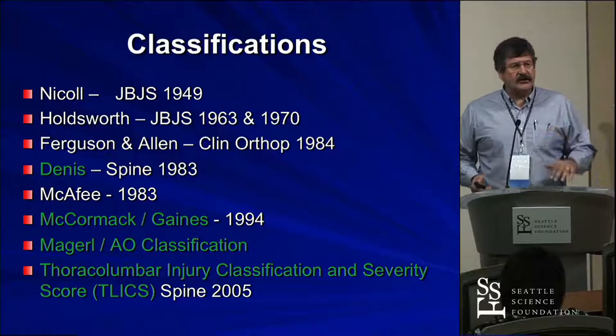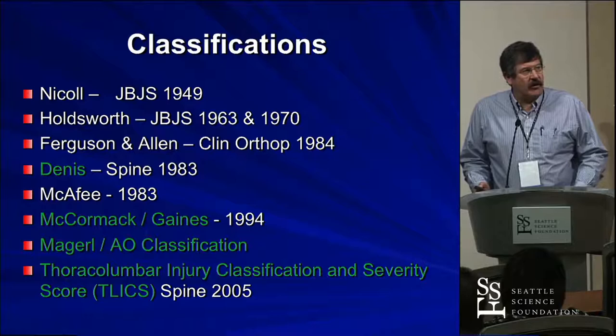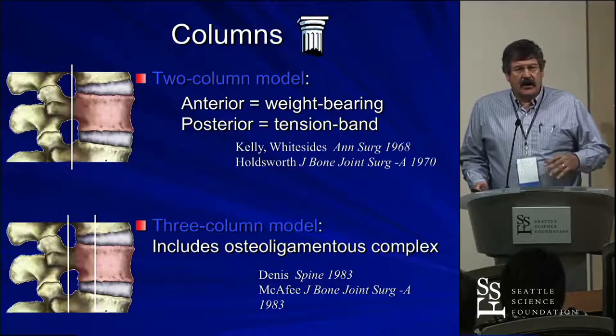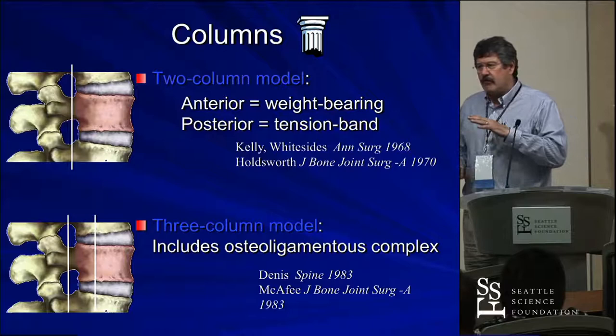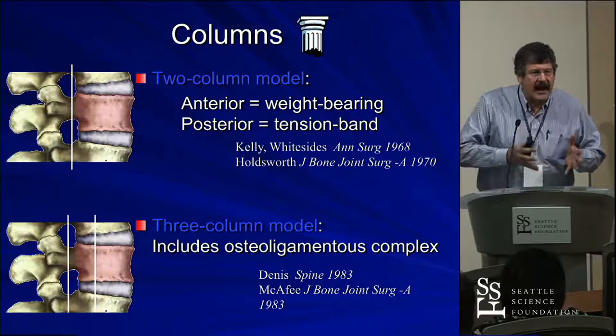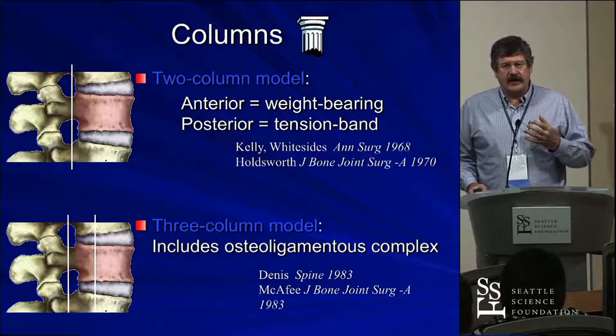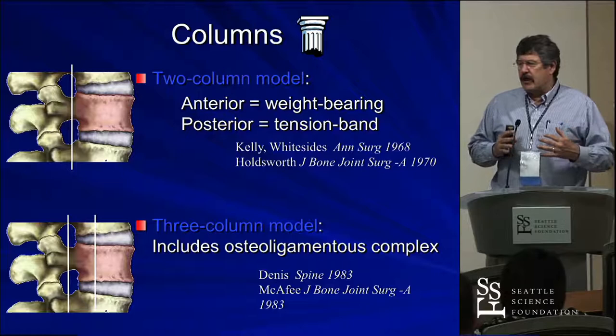Classifications have evolved over many years. Some of the more modern ones include the Dennis, McCormick, the AO, thoracolumbar, and TLICS classifications. Early on, people talked about two columns: the anterior column, which was the vertebral body resisting axial load, and the posterior column, which resisted flexion or tension band. We eventually went to the Dennis classification — at the time we were using CT, having gone from plain films and tomograms.